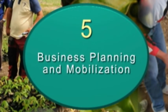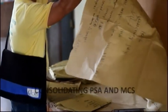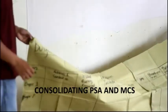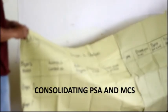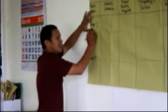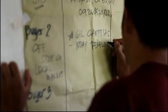Step 5 requires farmer members to prepare a business plan before making that big leap in the conduct of their first product supply to identifying buyers.